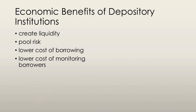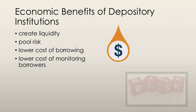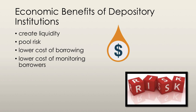Financial depository institutions create liquidity. They do this by borrowing short and lending long — taking deposits while standing ready to repay them on short notice, while still making long-term loan commitments. They also pool risk. The more people that money is loaned out to, the less of a difference it makes if one person defaults, because the cumulative interest paid by all other borrowers can cover the default of that one person.